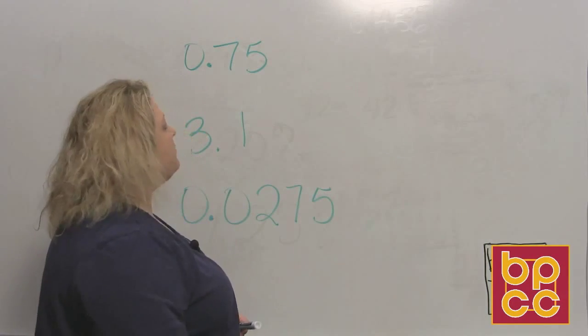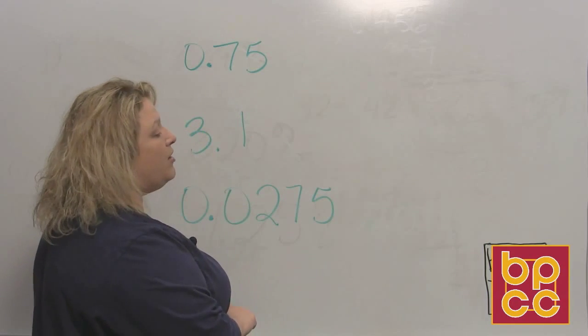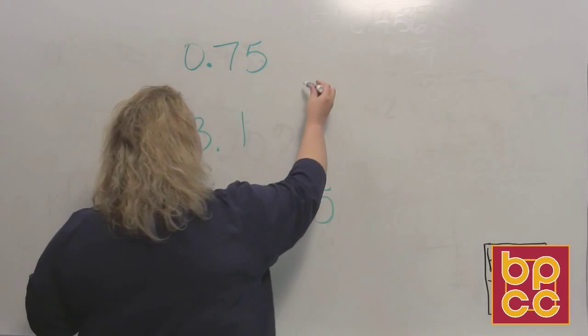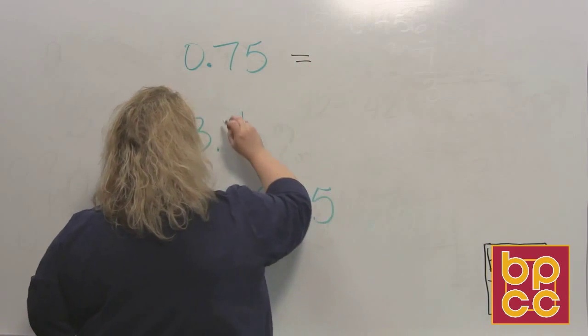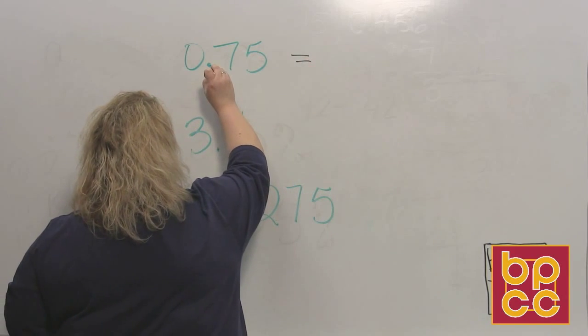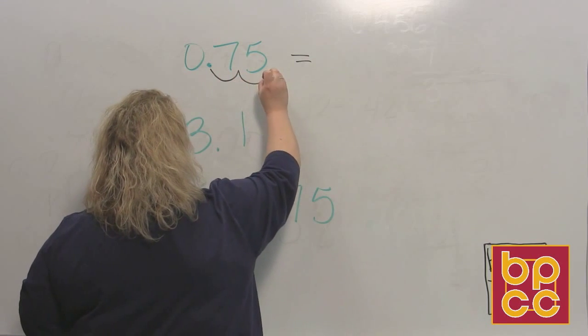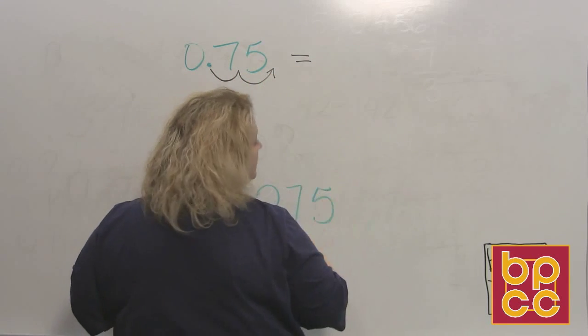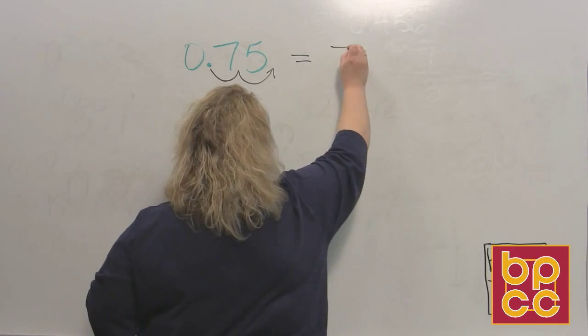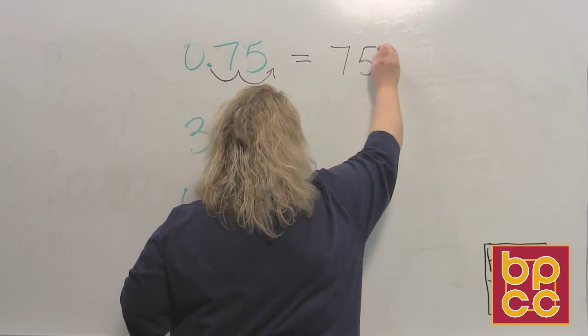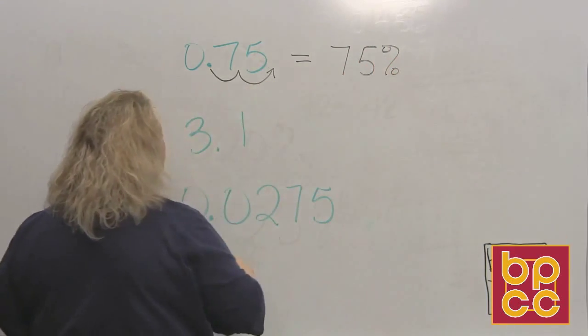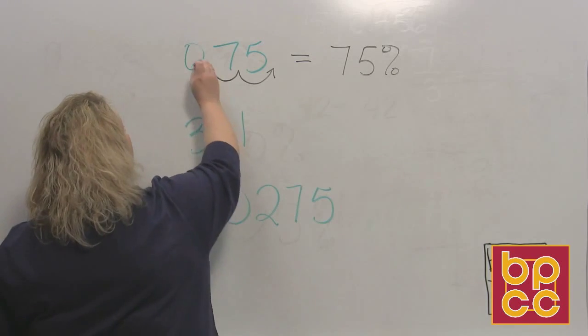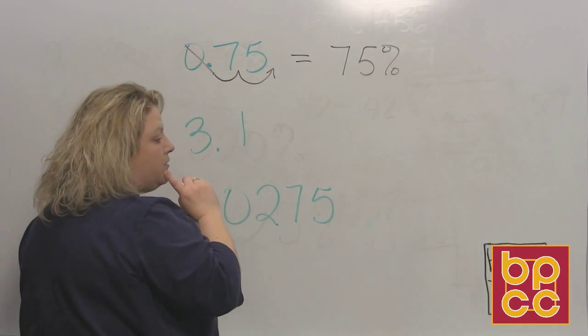All right, I have 0.75, which will be 75 hundredths. And in order to change this decimal into a percent, I take the decimal point where it is, move it two places to the right, and put a percent sign behind it. 75%. Now, once you move your decimal, if the zero in front here, you really don't need it, so you can just cross it off.